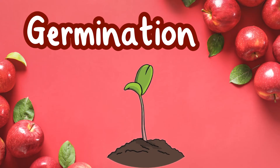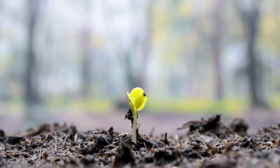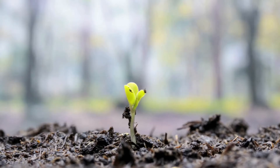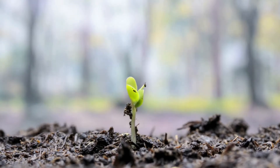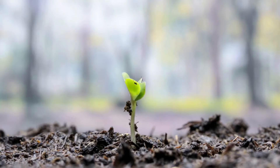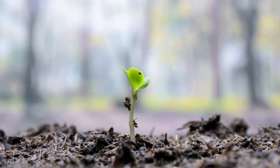Germination. The seed sends out roots into the soil to find water and nutrients, while a small shoot starts to grow upward. This shoot will become the apple tree's trunk.